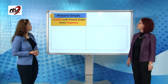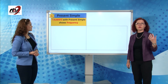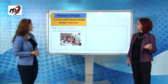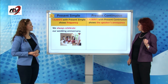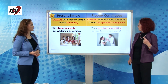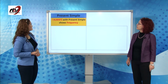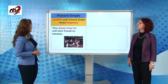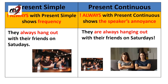The fifth use is with the adverb always, which is an exception. We use always with present simple to show how frequently an action happens — we always celebrate our wedding anniversary. Whereas with present continuous, it shows the speaker's annoyance — the speaker is not pleased. They're always forgetting our wedding anniversary. Another example: they always hang out with their friends on Saturdays — that's a habit. But they are always hanging out with their friends on Saturdays — the girls are complaining about the boys' habits.